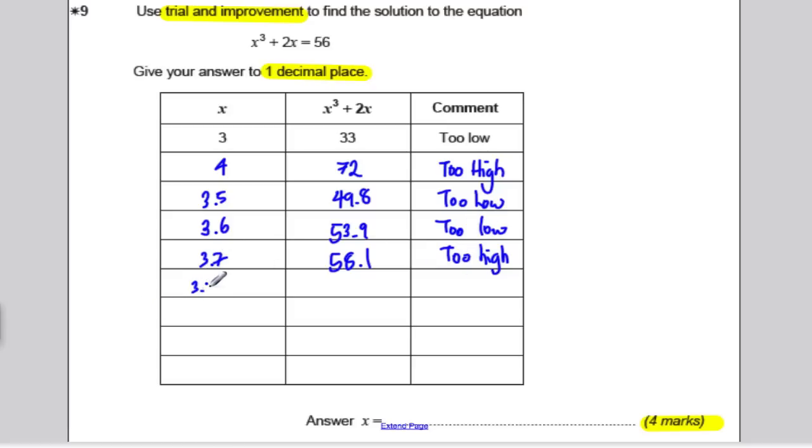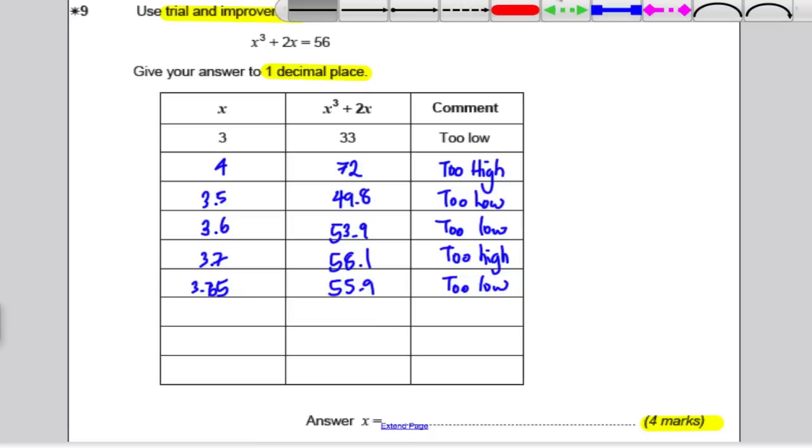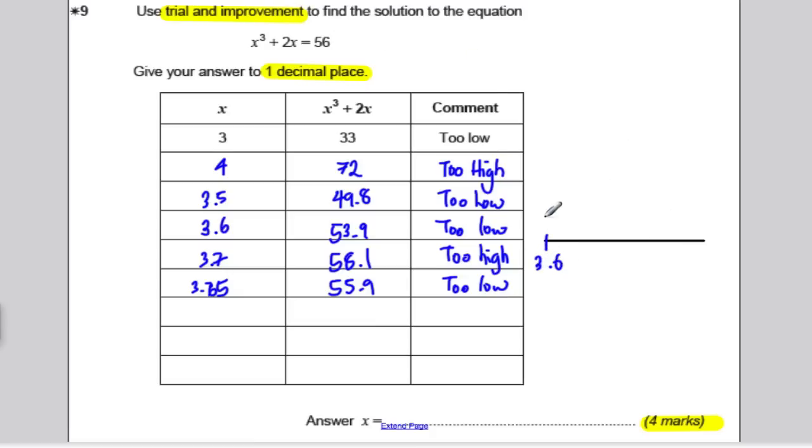I said, always try the number in between. So, we're going to try 3.65, and we get ourselves the answer 55.9, which is slightly too low. Remember, I said draw ourselves a little picture. What's happening to describe what's happening? Well, 3.6 was low, 3.7 was high, and when we went halfway in between 3.65, it was slightly low. So, the answer must be slightly closer to 3.7. So, we write x is equal to 3.7 to 1 decimal place, and we've done that first question.